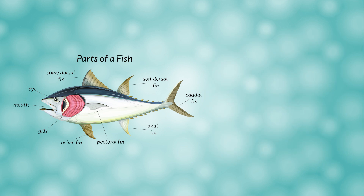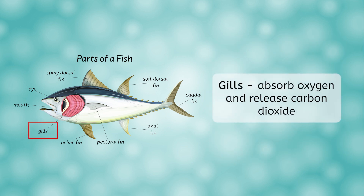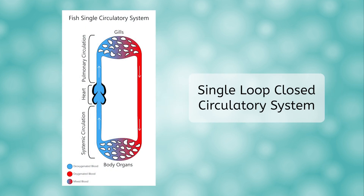Finally, let's discuss gills. In the most simple terms, fish use gills to breathe. Water flows over the gills, absorbing oxygen and releasing carbon dioxide. These gills are a part of a closed circulatory system, meaning the blood never enters the body cavities but stays within the blood vessels. More specifically, fish have a single loop circulatory system, which means the blood only flows through the heart once. Humans have a closed circulatory system also, but for humans it is a double loop, so blood flows through the heart twice.